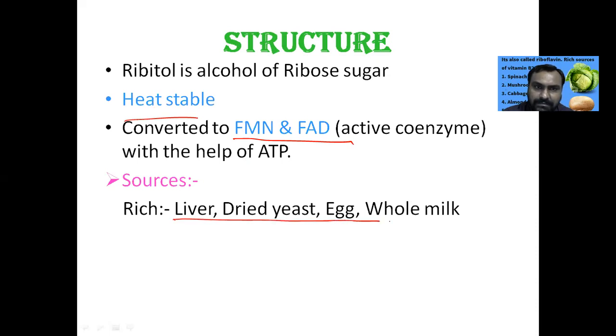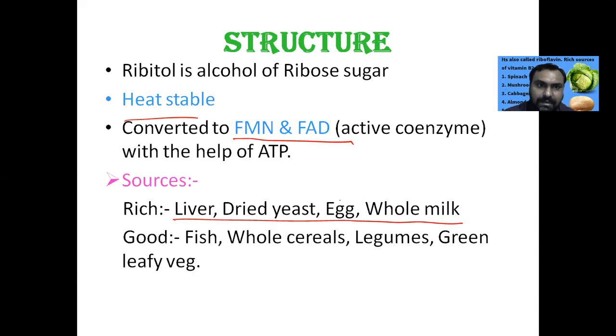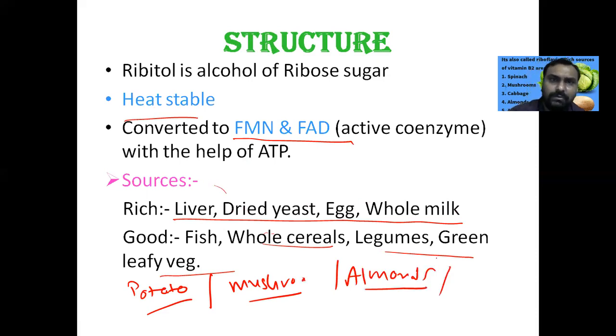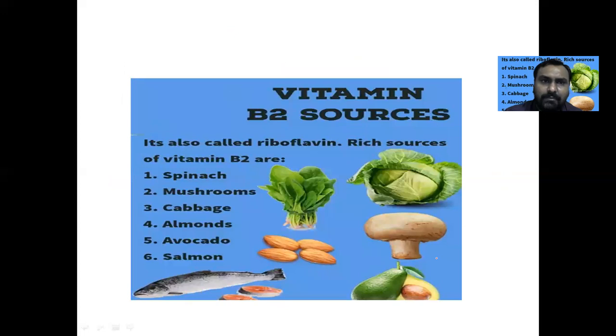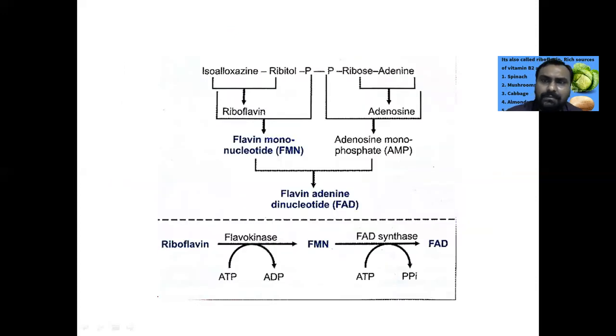Now what are the sources of this riboflavin? Liver, yeast, egg, milk, cereals, legumes, green leafy vegetables, potato, mushrooms, almonds, cabbage. These are all good sources of riboflavin. You can see spinach, avocado, salmon fish. These are all good sources of vitamin B2.